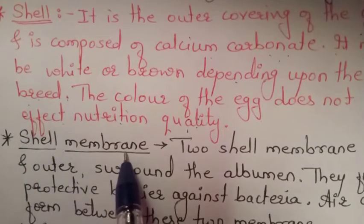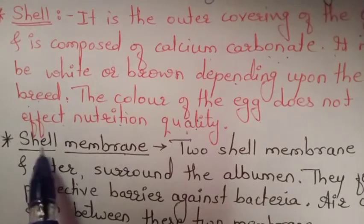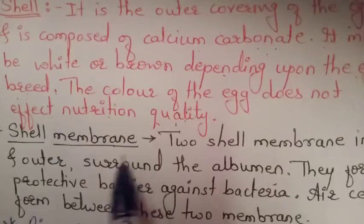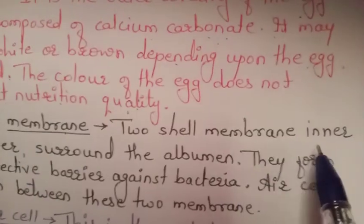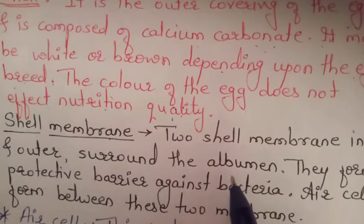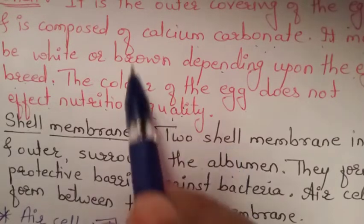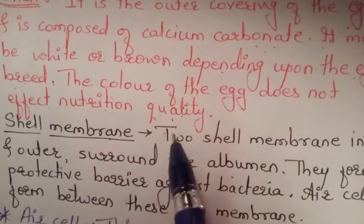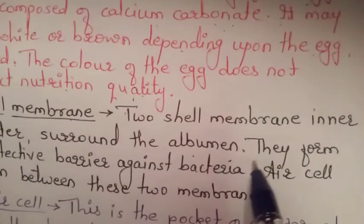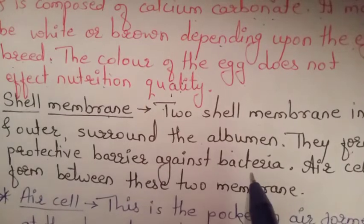Two shell membranes are present — inner and outer — which surround the albumen. The surrounding area is the shell of the egg, and the outer and inner shell membranes are present around the albumen.